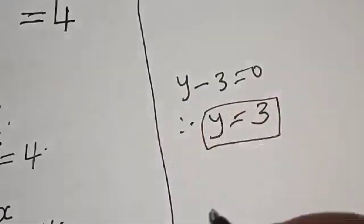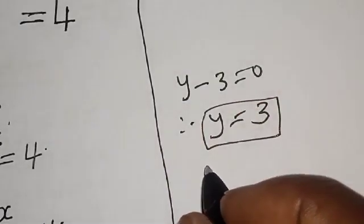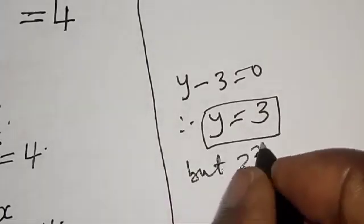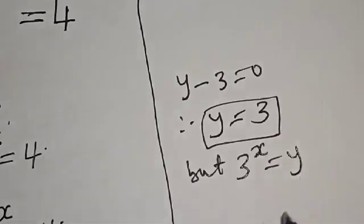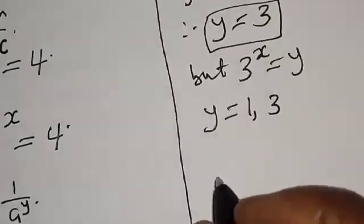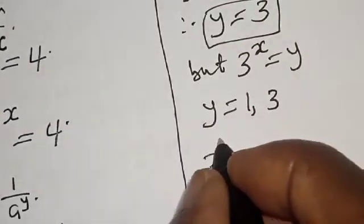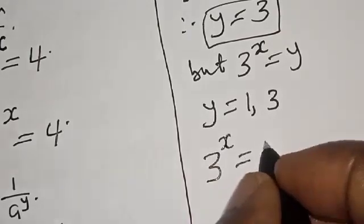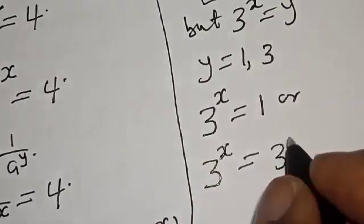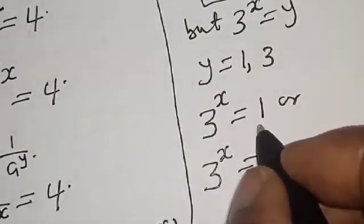Those are the solutions for y. But recall that 3 raised to power x is equal to y, and y equals 1 and 3. Therefore we have 3 raised to power x equal to 1, or 3 raised to power x equal to 3.